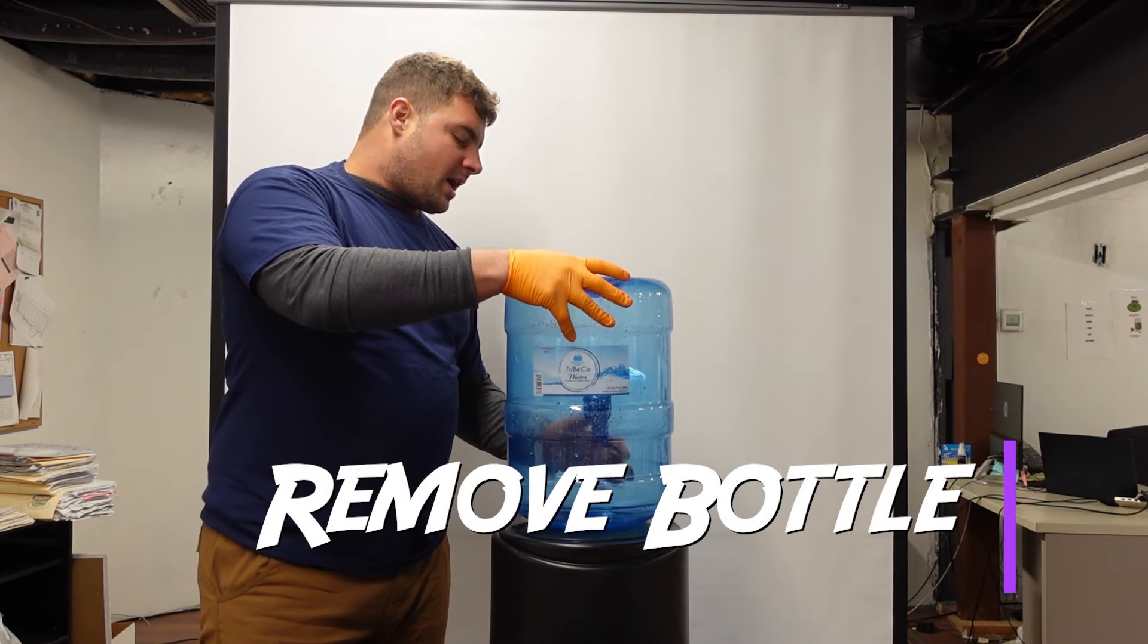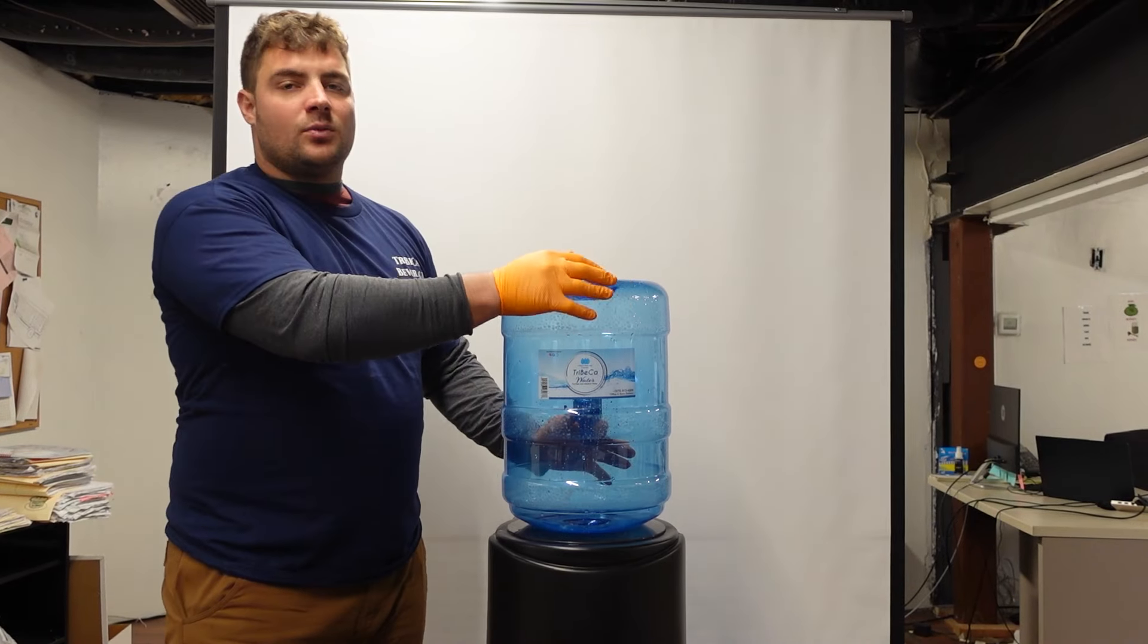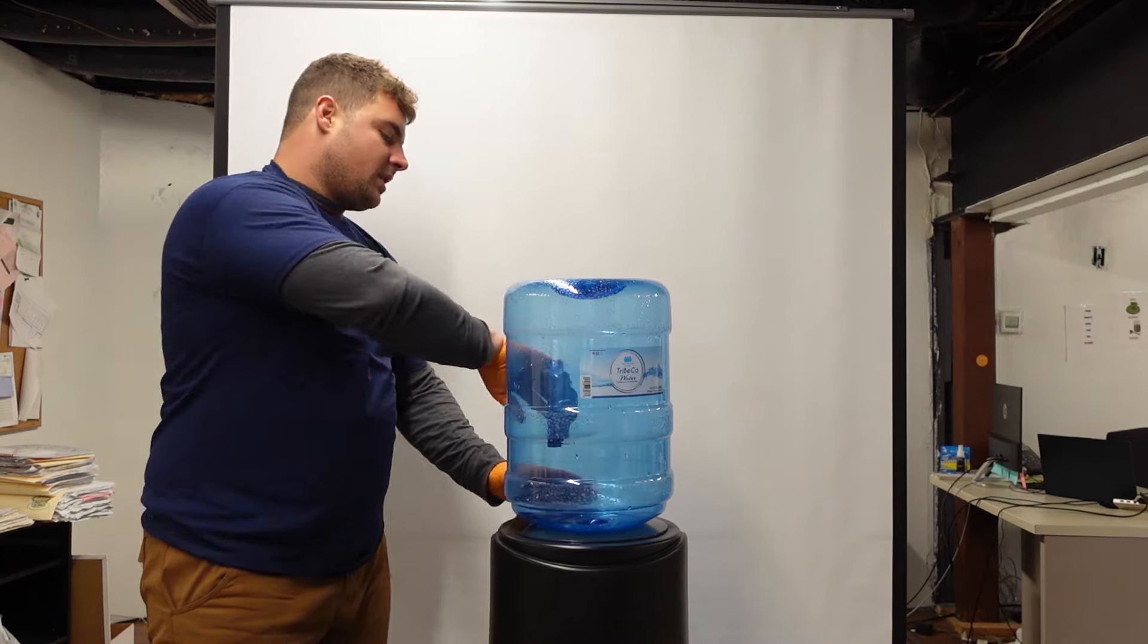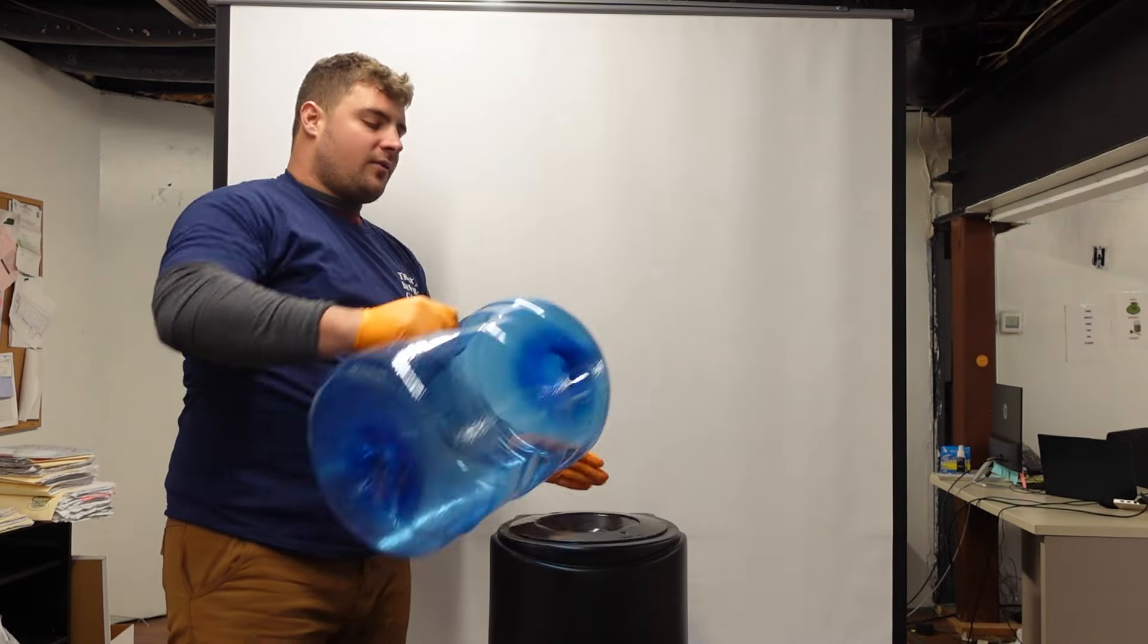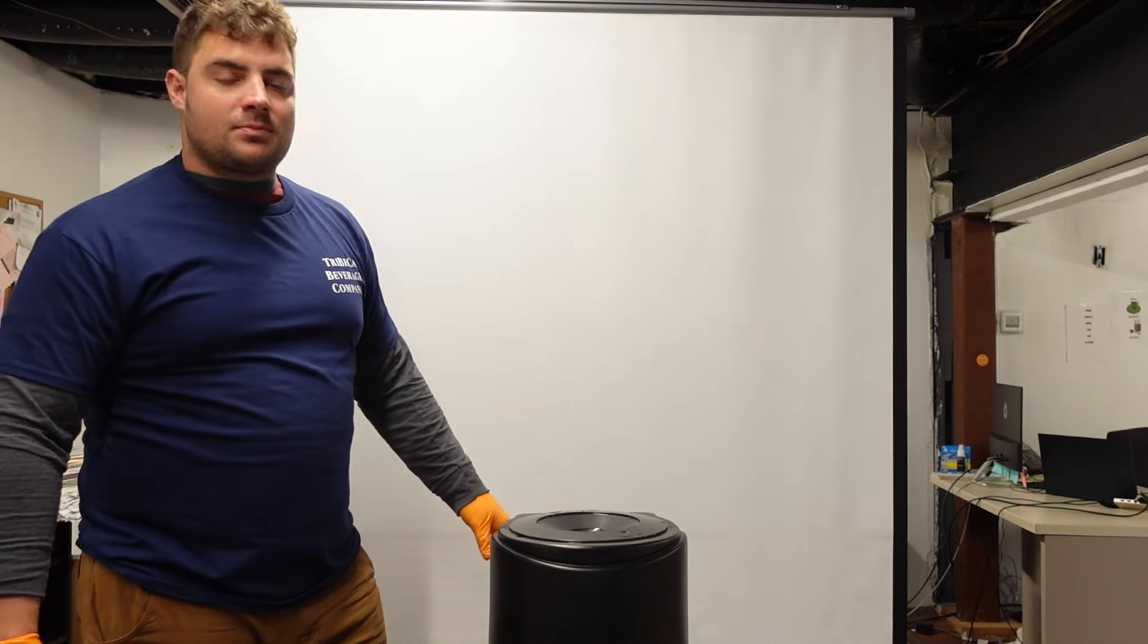First we're going to remove the bottle. If it has a little bit of water in it, try either draining the water through the spigots, or if you feel comfortable enough, you can take the bottle off and flip it upside down while spilling as little water as possible.